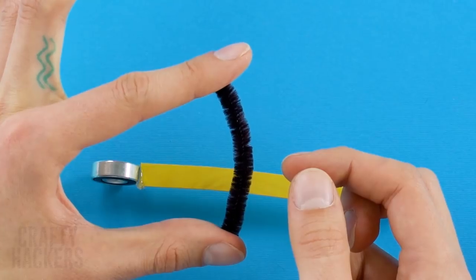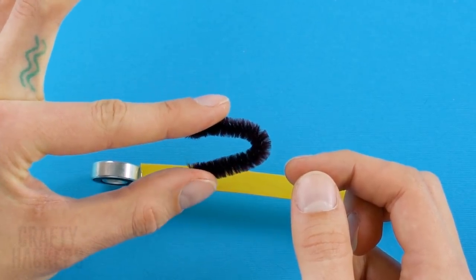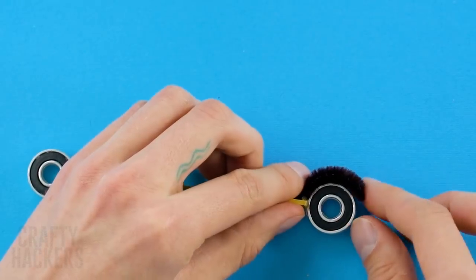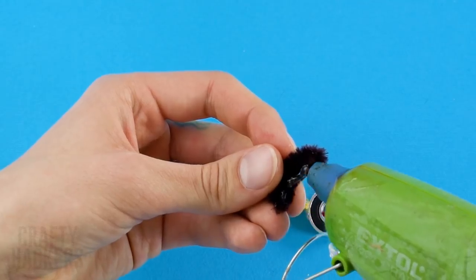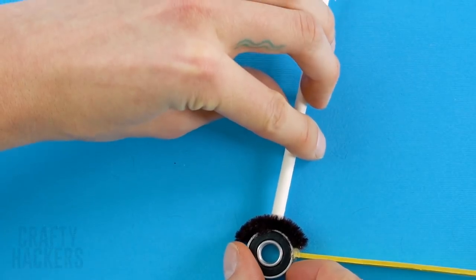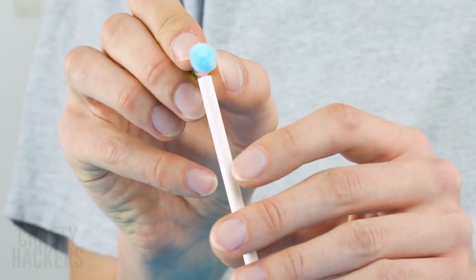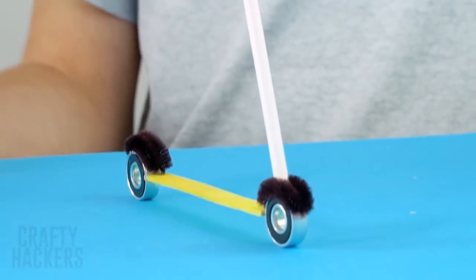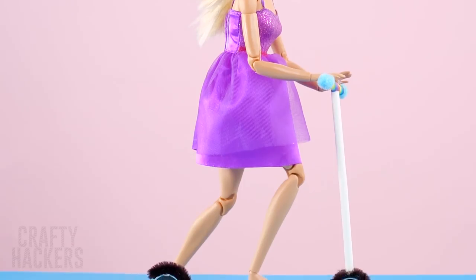Fold your pipe cleaner in half and form it into a half circle shape. Glue it right to the top of the wheel. Glue your long straw to the front and attach the shorter straw as handlebars. Use cotton pom-poms on the ends for handles. Now this is what we call heaven on wheels.